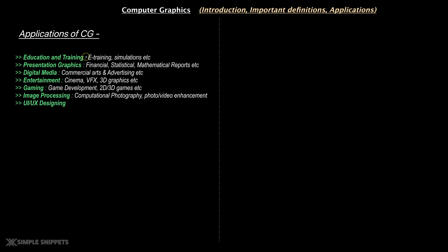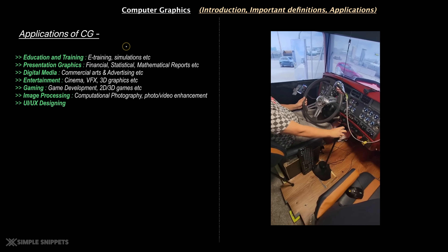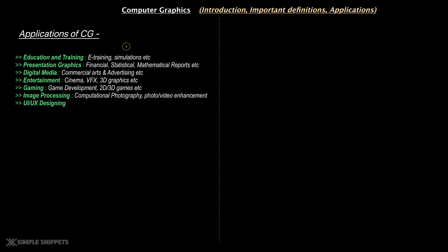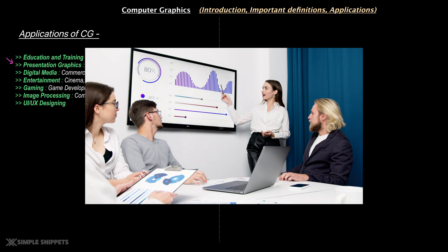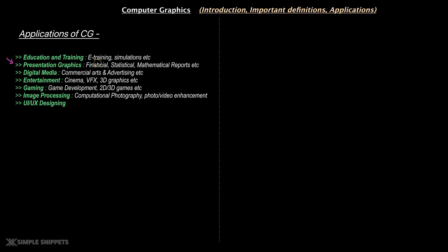In education and training, you have e-training and simulations — for example, flight simulators where you sit in a cockpit and see everything like an actual real plane, or driving tests. There are online training courses where a lot of computer graphics are shown. Presentation graphics is also a whole domain: financial, statistical, and mathematical reports, Excel graphs, charts, infographics — all computer-generated graphics playing a huge role behind the scenes.